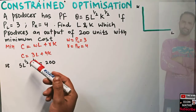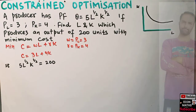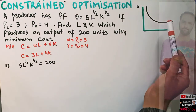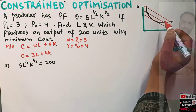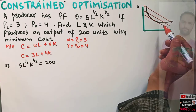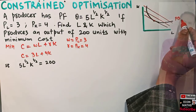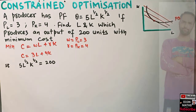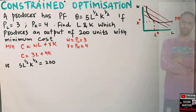Given the Cobb-Douglas production function, we want to achieve this production quota with minimum cost. Cost will be minimized when the slope of the production function equals the slope of the cost constraint — it occurs at the tangency between the isoquant and the isocost line. This tangency point gives us the corresponding labor and capital values that minimize our costs.